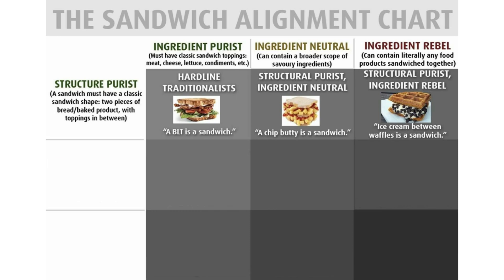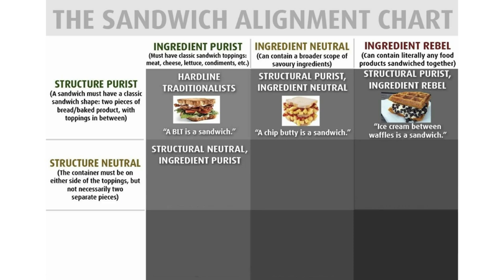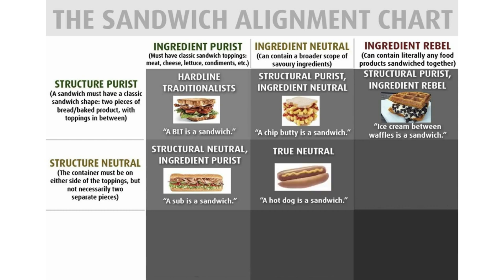Now we're learning about structure neutral — the container must be on either side of the toppings but not necessarily two separate pieces. You'd say a sub is a sandwich, totally call that a sandwich. If you're a true neutral, a hot dog is considered a sandwich. A hot dog isn't normal sandwich ingredients and a hot dog bun isn't typically a sandwich, but I would call it a sandwich.